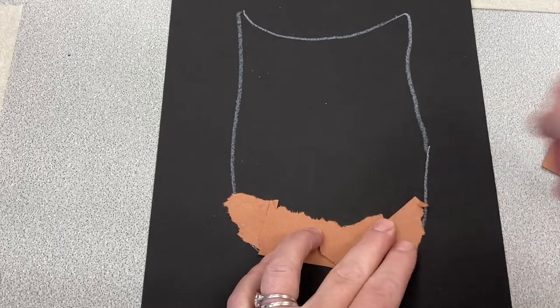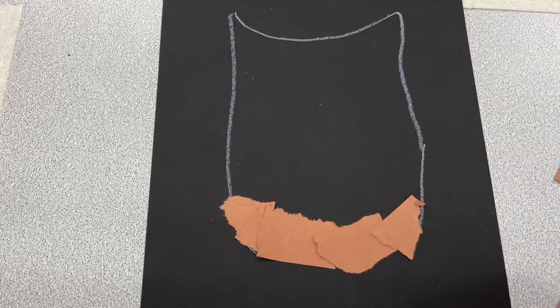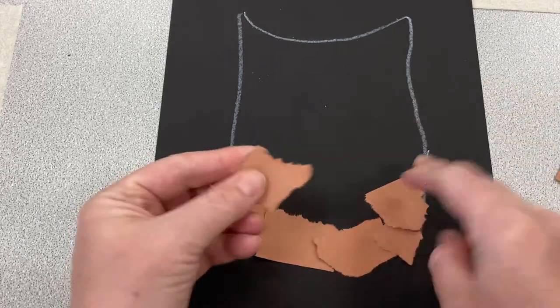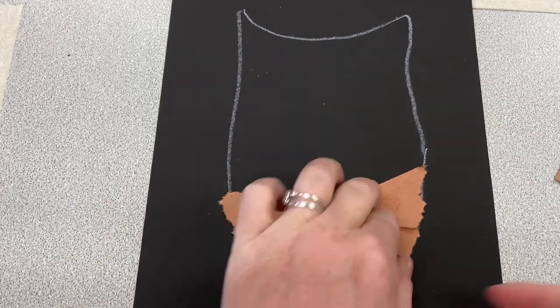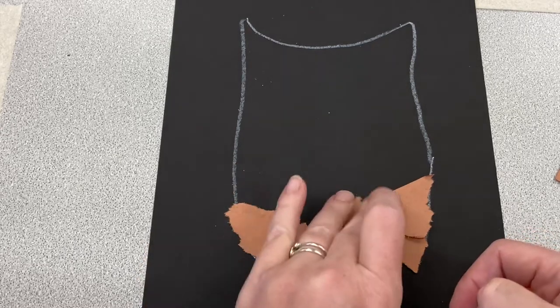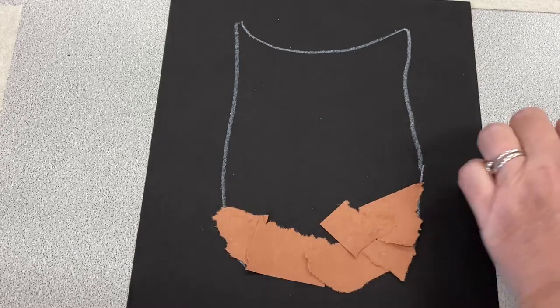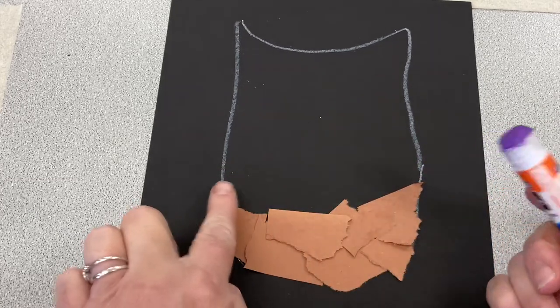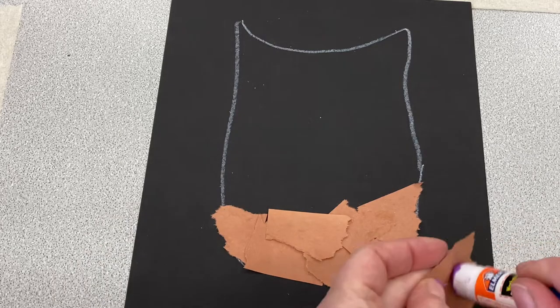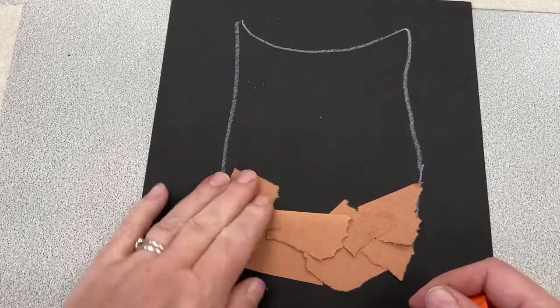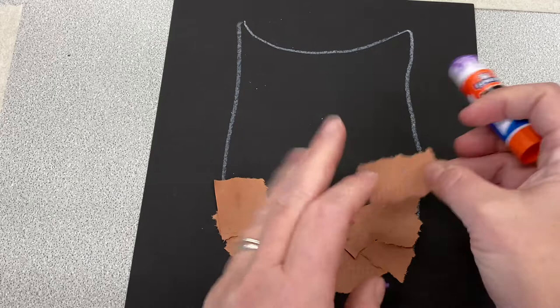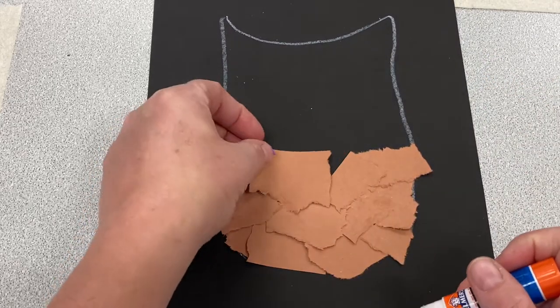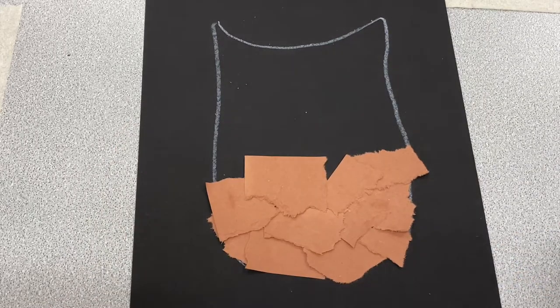I'm going to keep going, keeping all of my brown papers inside of the owl body. Start here at the bottom. I'm going to keep working my way across the owl. Time for the next color.